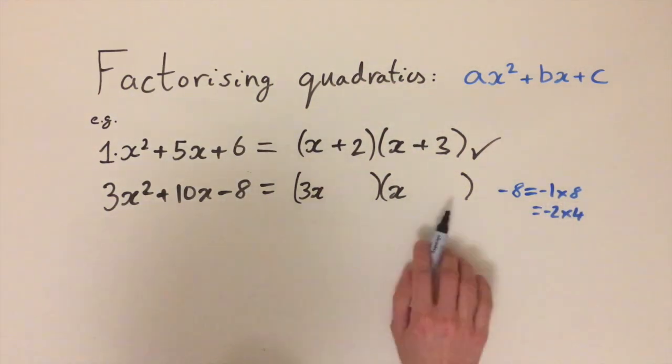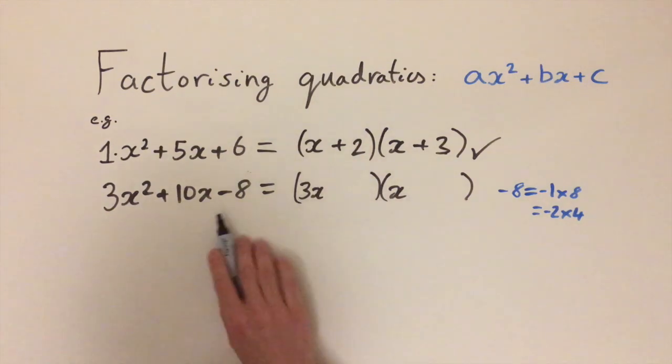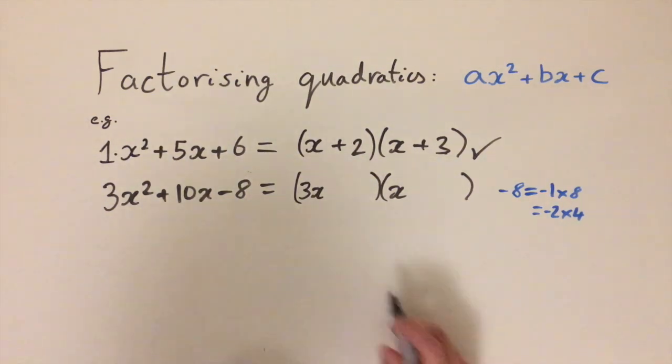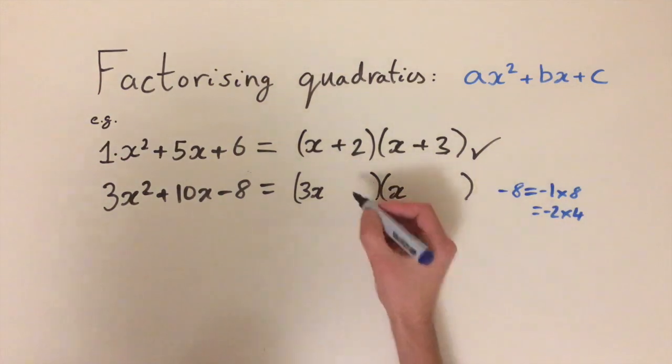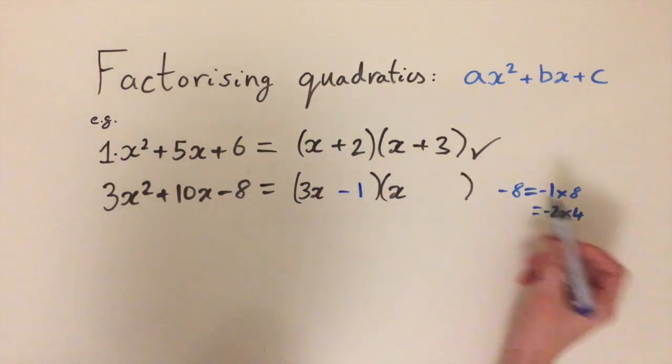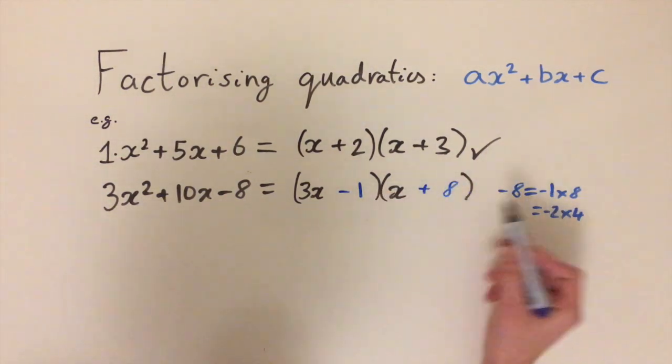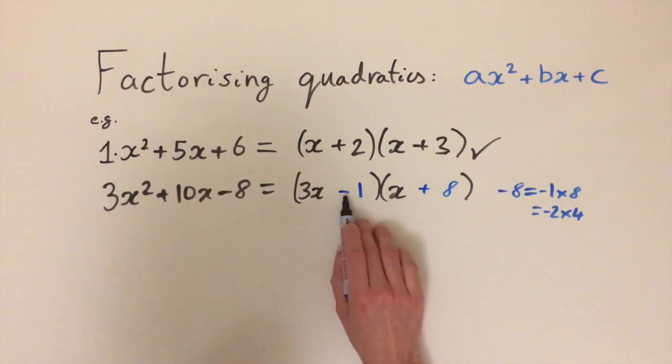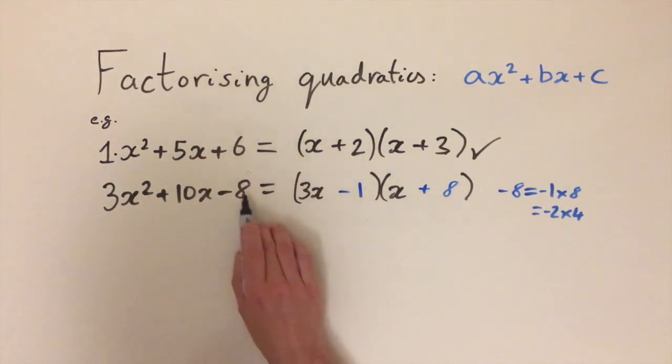And now we need to plug in these numbers and see which one gives us the x term. So if we just do this by trial and error, let's try minus 1 and plus 8. So what's this going to give us if we multiply the brackets out? We're going to get minus 1 times 8, this is going to give us minus 8. We've already got the 3x squared.